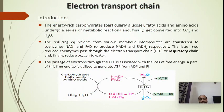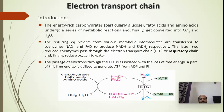What is the electron transport chain? Energy-rich carbohydrates, particularly glucose, fatty acids and amino acids undergo a series of metabolic reactions and finally get converted into CO2 and H2O. The reducing equivalents from various metabolic intermediates are transferred to coenzyme NAD+ and FAD to produce NADH and FADH2. These reduced coenzymes pass through the electron transport chain and finally reduce oxygen into water. A part of the free energy liberated is utilized to generate ATP from ADP and inorganic phosphate.